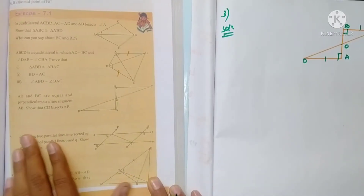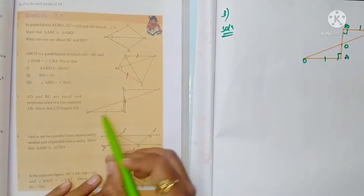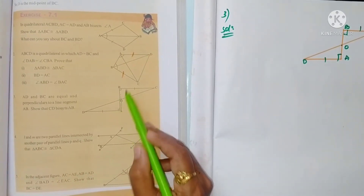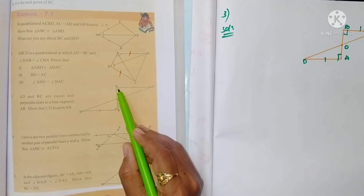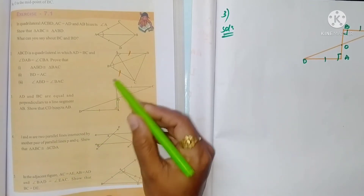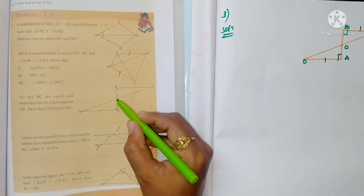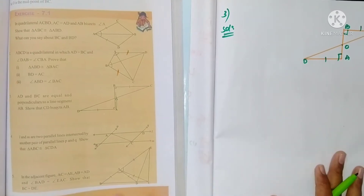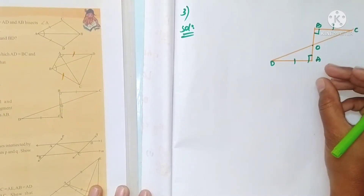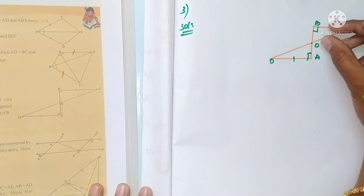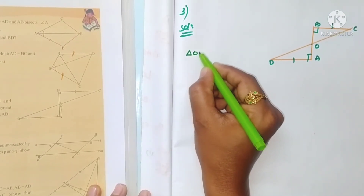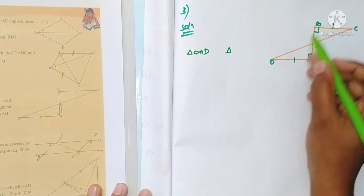Third problem: AD and BC are equal and they are both perpendicular to AB. Show that CD bisects AB — meaning OA is equal to OB, proved by CPCT. Now here you can see two triangles. Compare triangle OAD and triangle OBC.